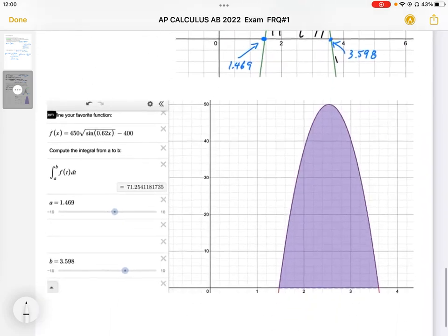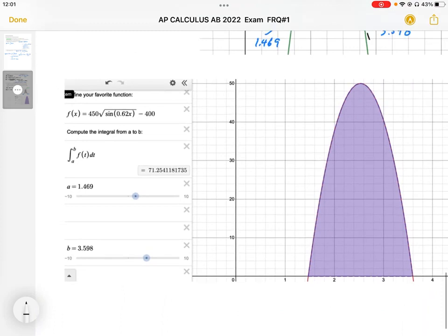When we integrate that function from the two bounds of 1.469 and 3.598, the area we get is 71.25 cars.